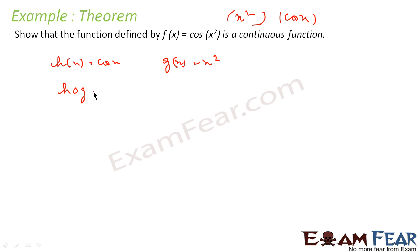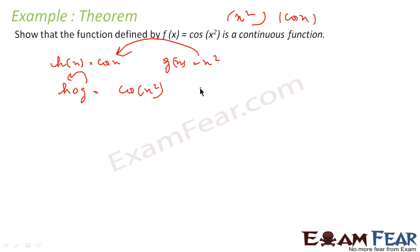Then h∘g is nothing but cos(x²). Please note it is not g∘f but h∘g, because first you take x², then apply cos — so first g, then h, giving h∘g. This is also continuous. Since h∘g is nothing but f(x), and h(x) and g(x) are both continuous, h∘g must be continuous, so f(x) is also a continuous function.